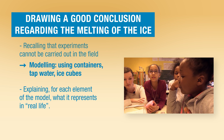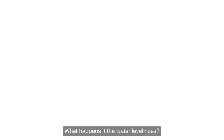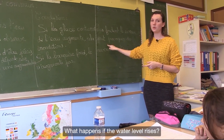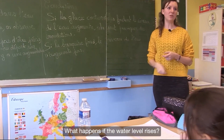This can be done by explicitly asking the students: we have melted ice cubes in containers, but what do our results mean about the melting of continental ice, the melting of sea ice and the rise in sea level? What is happening if the water level increases?